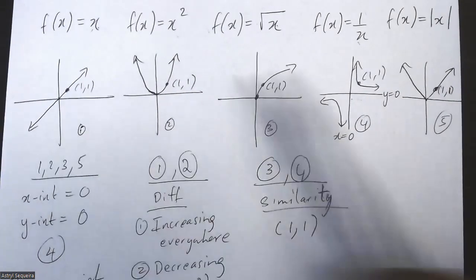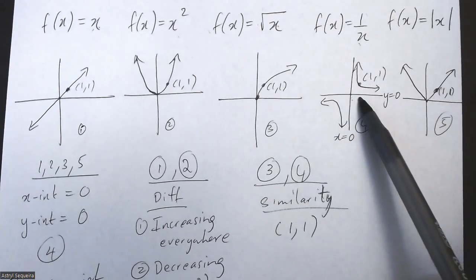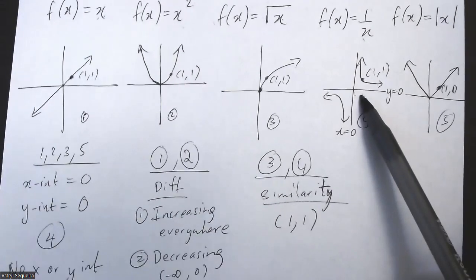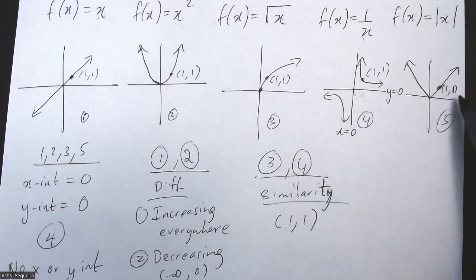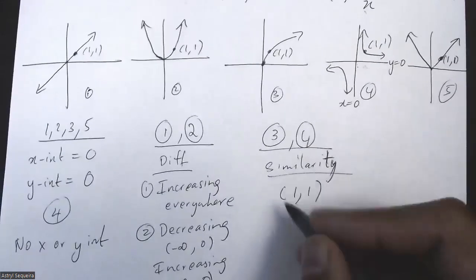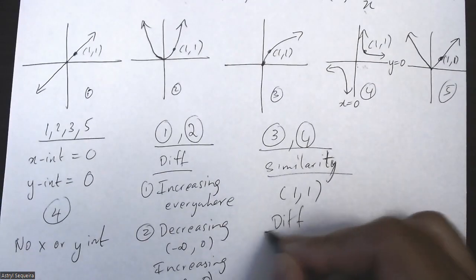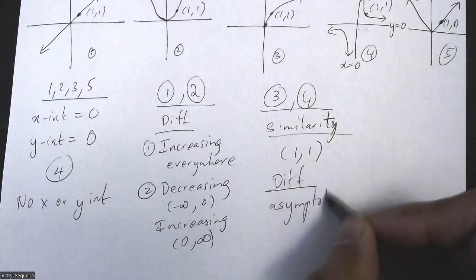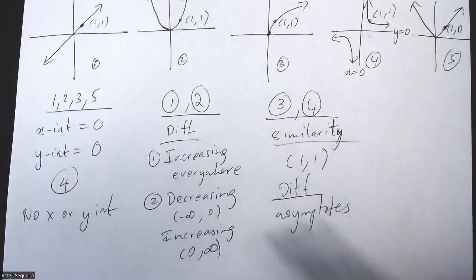That's a very difficult one when comparing any of these graphs to 1 over x to find a similarity. Differences with 1 over x is really simple. You can just say it has asymptotes. None of the other graphs have asymptotes, so that's something you can put as differences.